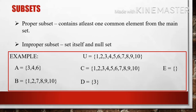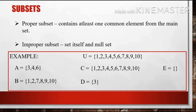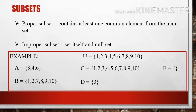Set B whose elements are 1, 2, 7, 8, 9, and 10 is also a proper subset since it has just some elements from the universal set. Set C, whose elements are the same as those in the main set, is considered an improper subset. Set D whose element is 3 is a proper subset. Set E, which is the null set, is an improper subset. Improper subsets are either the null set or the set identical to the main set.